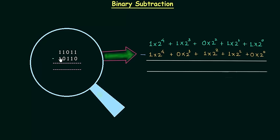The two binary numbers are 11011 as the first binary number and 10110 as the second binary number. I will magnify this subtraction by including the weights of different positions: 2 raised to power 0, 2 raised to power 1, 2 raised to power 2, 2 raised to power 3, and 2 raised to power 4. Along with these coefficients I will also write down the weights, so we can start with our subtraction directly.